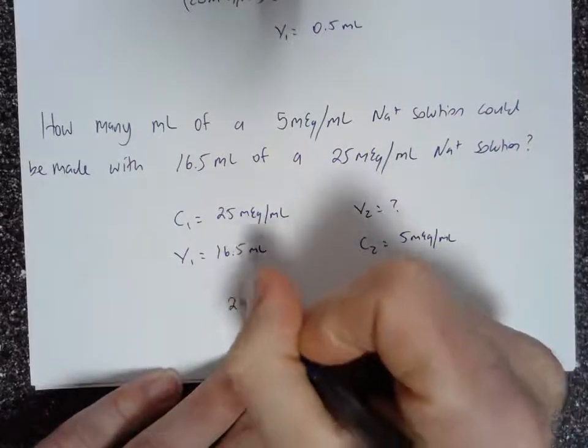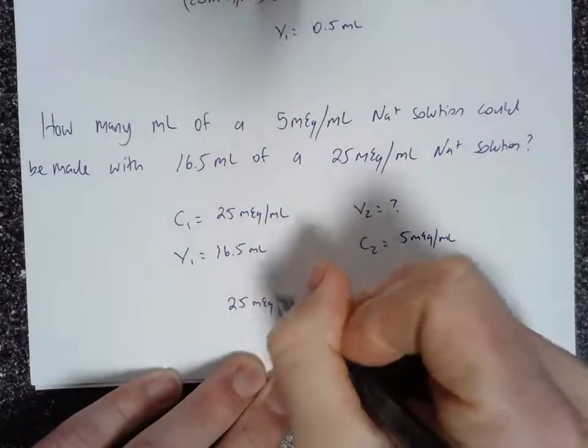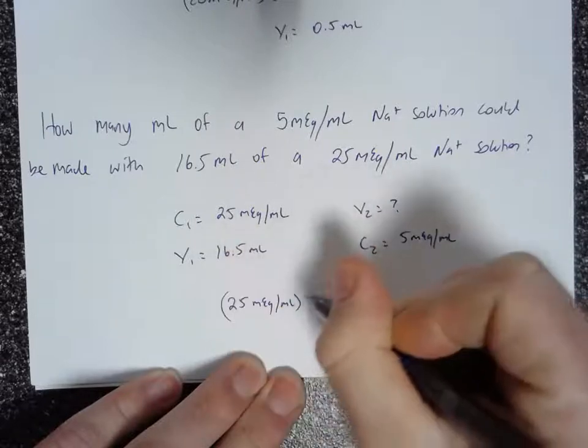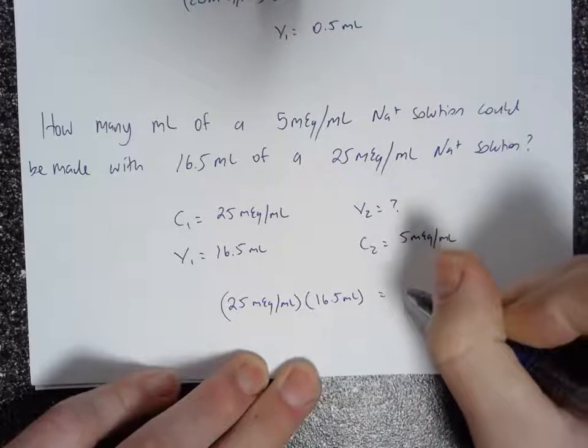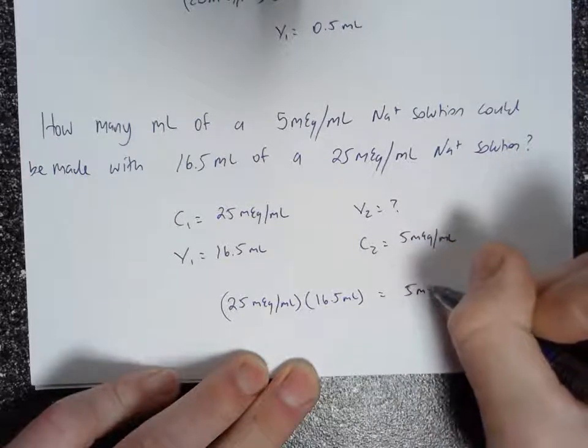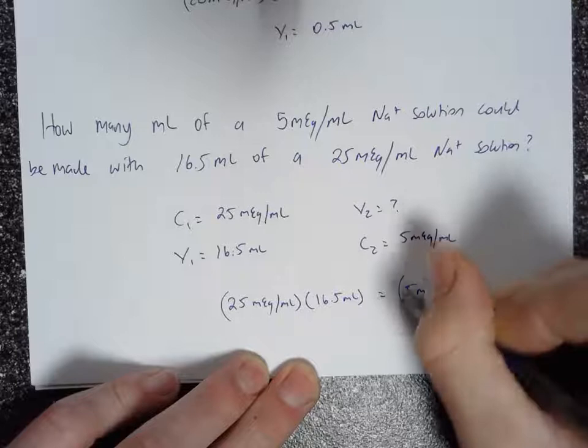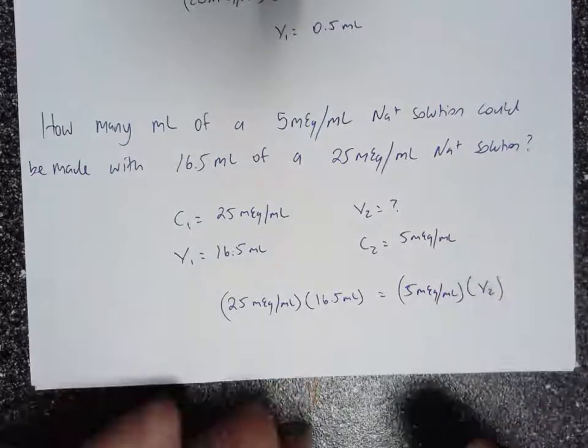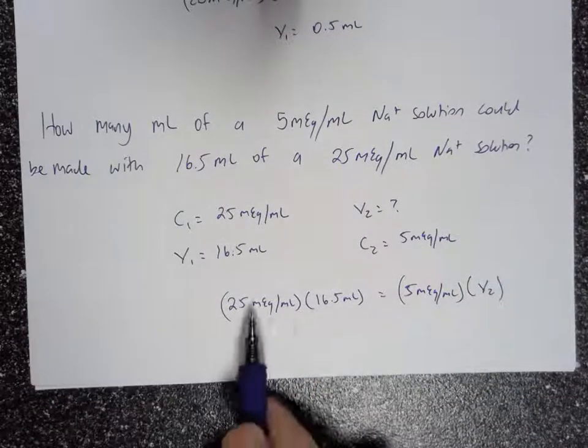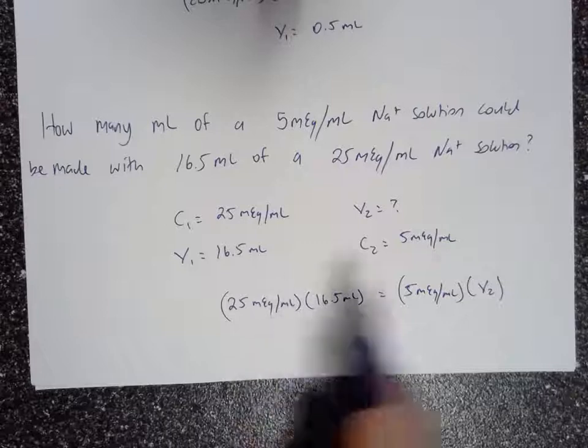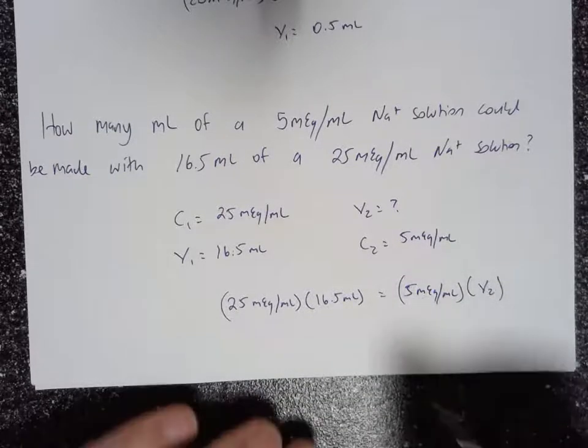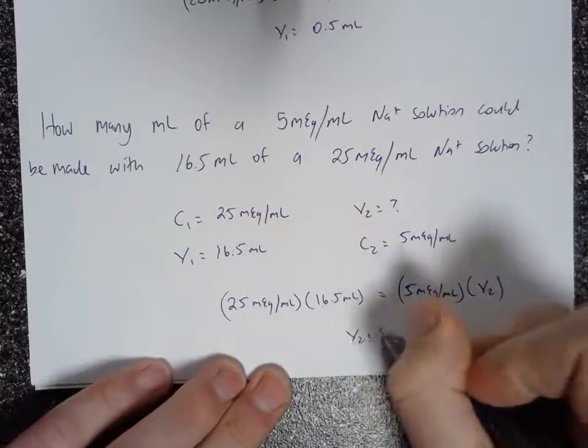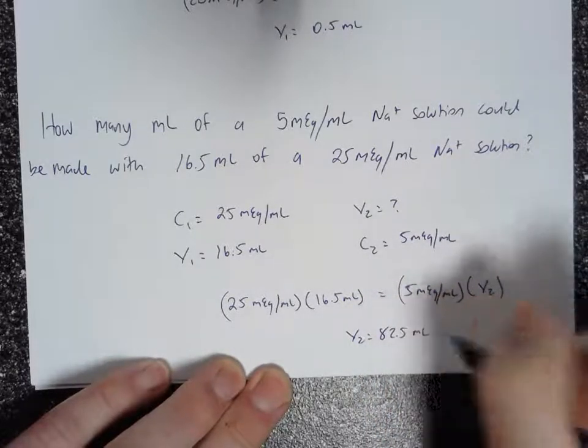And so I just set it up. My units, 25 milliequivalents per milliliter times 16.5 milliliters equals 5 milliequivalents per milliliter times V2. And then for this one, you multiply these two numbers together and then divide by this 5 over here. And what you'll end up with for V2 is 82.5 milliliters.